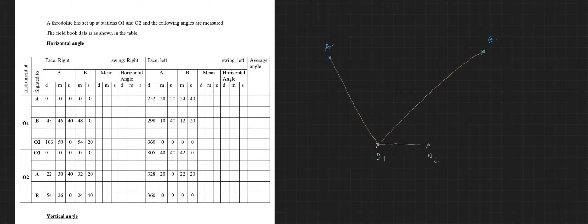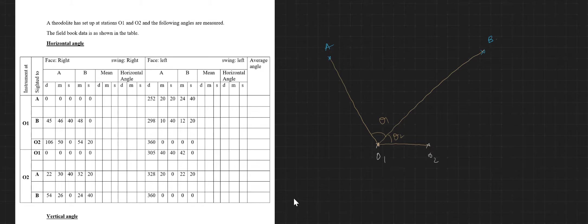What you do first is: you will sight from O1 towards A, then towards B, and then towards your other station point. You need to fix the station point at the start, and you will find these three angles — suppose theta one and theta two. You will do this for right face right swing and left face left swing as done in the last class. After this, you will sight from O1 towards A, then you will get the first angle — say theta three.